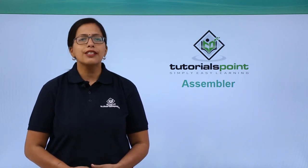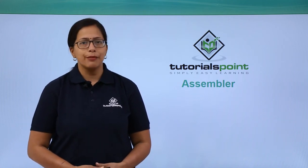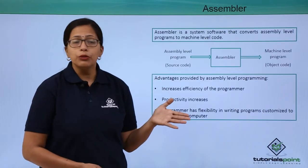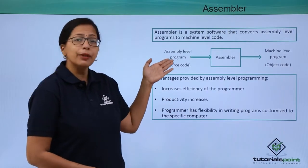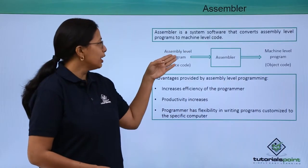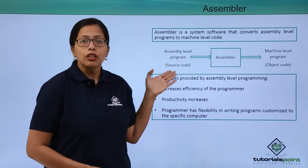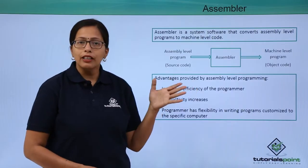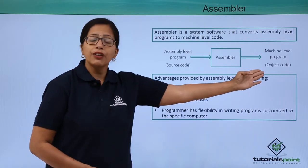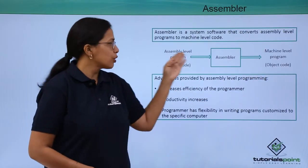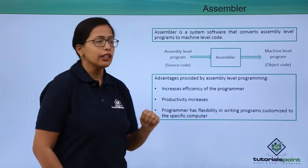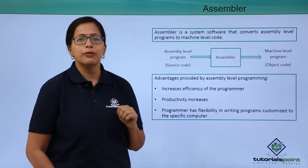In this video we are going to discuss about assemblers. Assemblers are language processors — they convert the assembly level program into the machine level program. The assembly level program that the programmer writes is called the source code, and the assembler converts it into the object code. So the source code is the input for an assembler and the object code is the output.